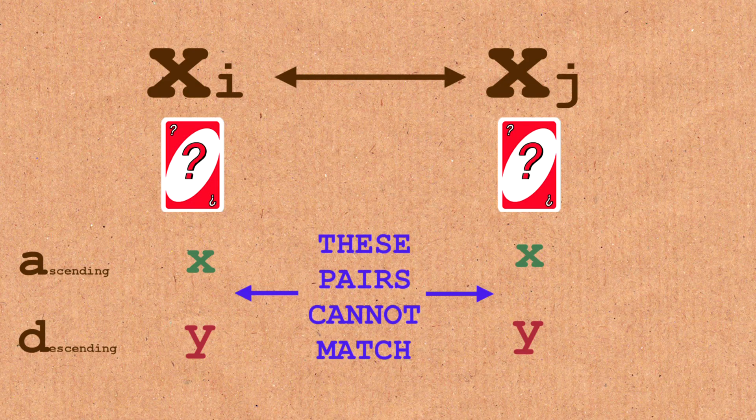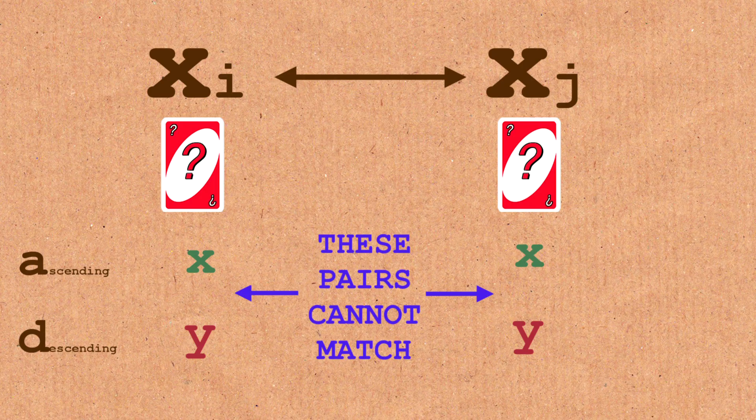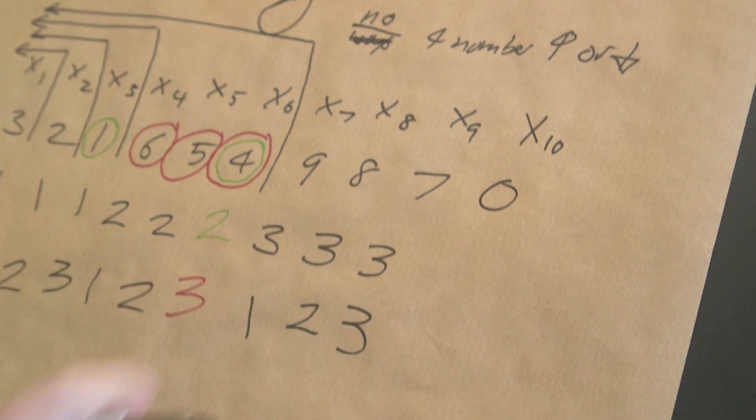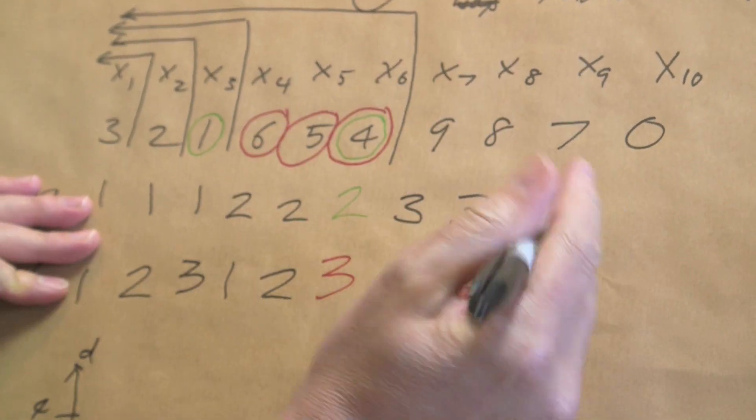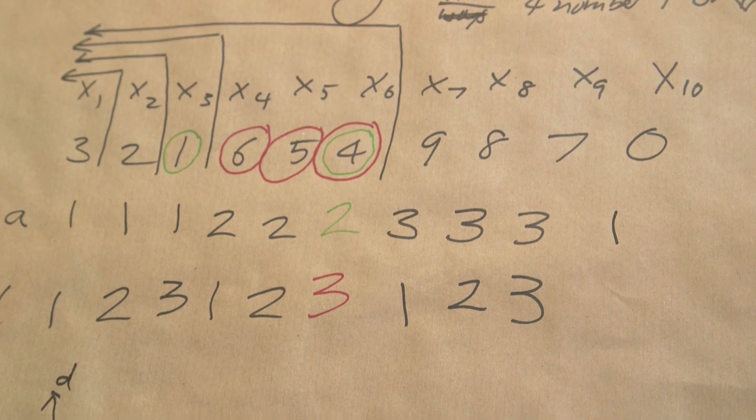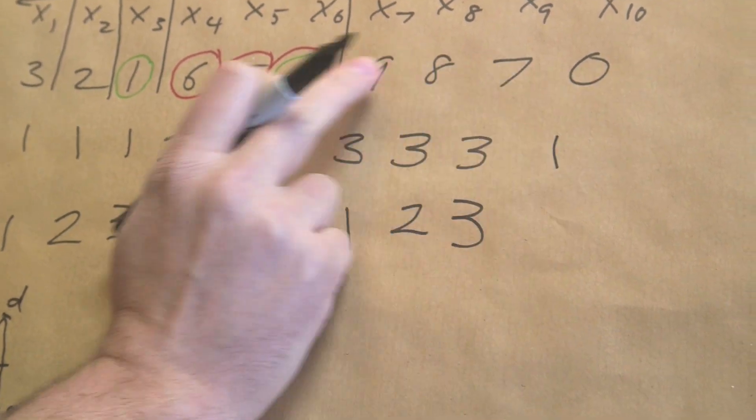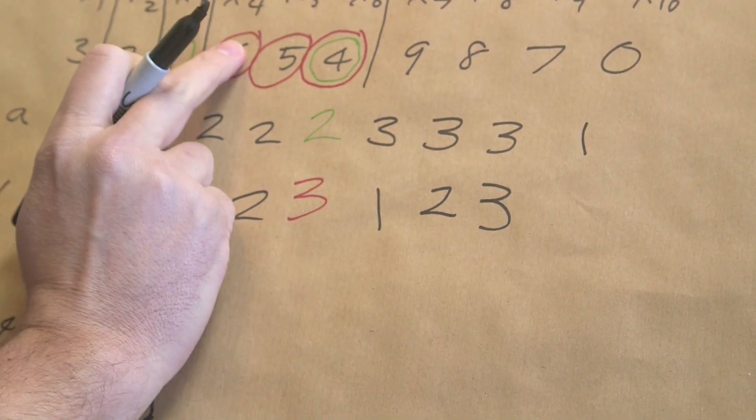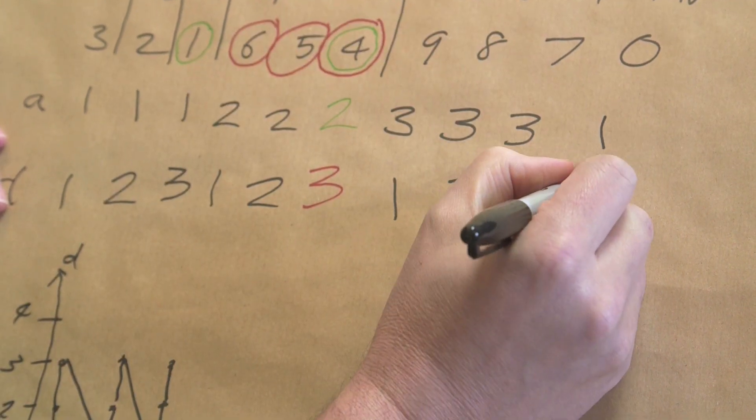So now what does that mean? Well, what happens if we add in an x10, which is zero? So zero is less than every number here, so that's one. But now we know that we've got nine, eight, seven, zero, or six, five, four, zero, whatever. We know that's four.